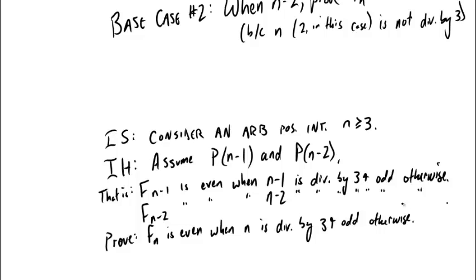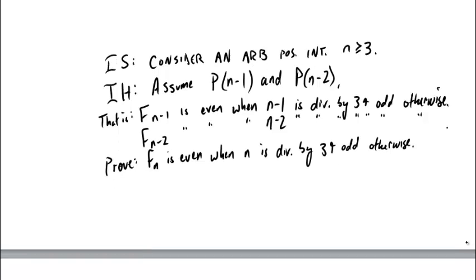How do we go about proving this? We don't know whether n is divisible by 3 or not, and we need to handle both cases: proving F of n is even when n is divisible by 3, and proving F sub n is odd when n is not divisible by 3. A reasonable approach is to prove each individually. Let's start with the case that gives the most information: when n is divisible by 3.